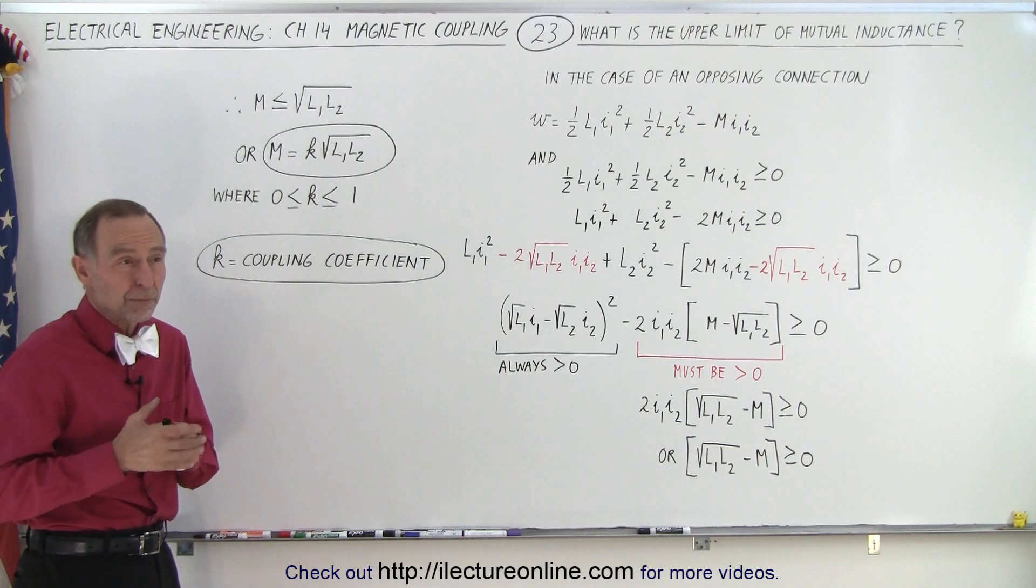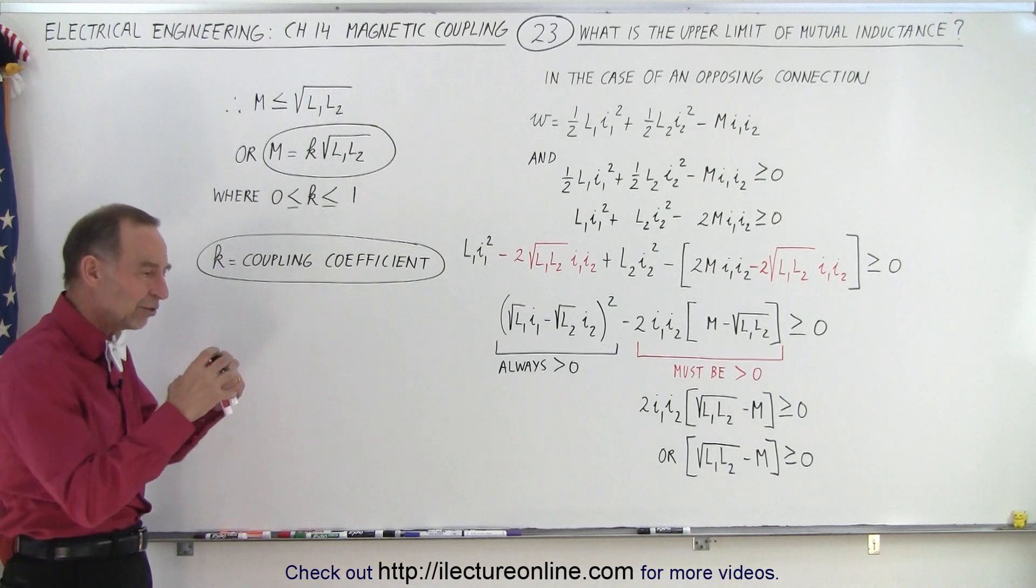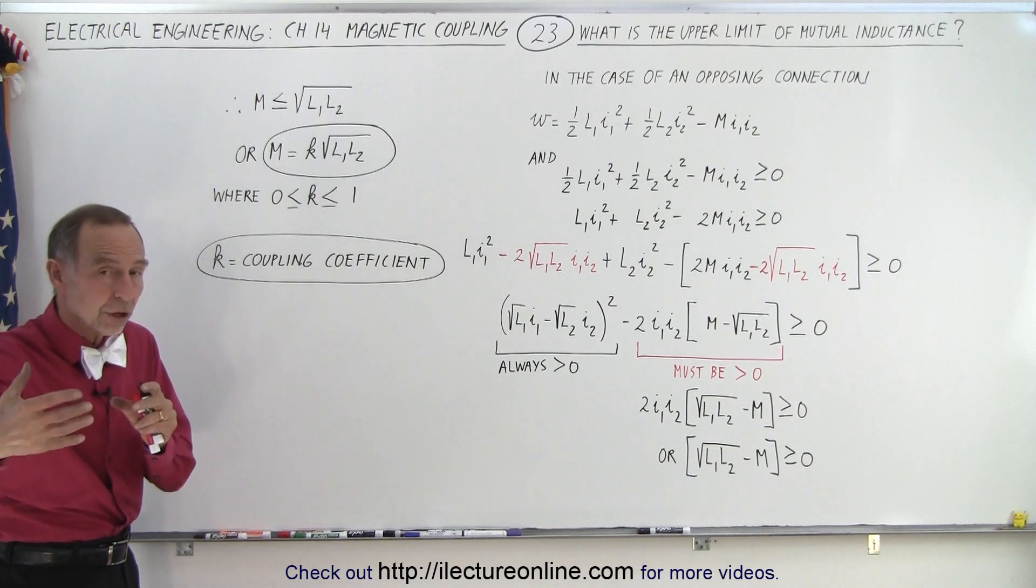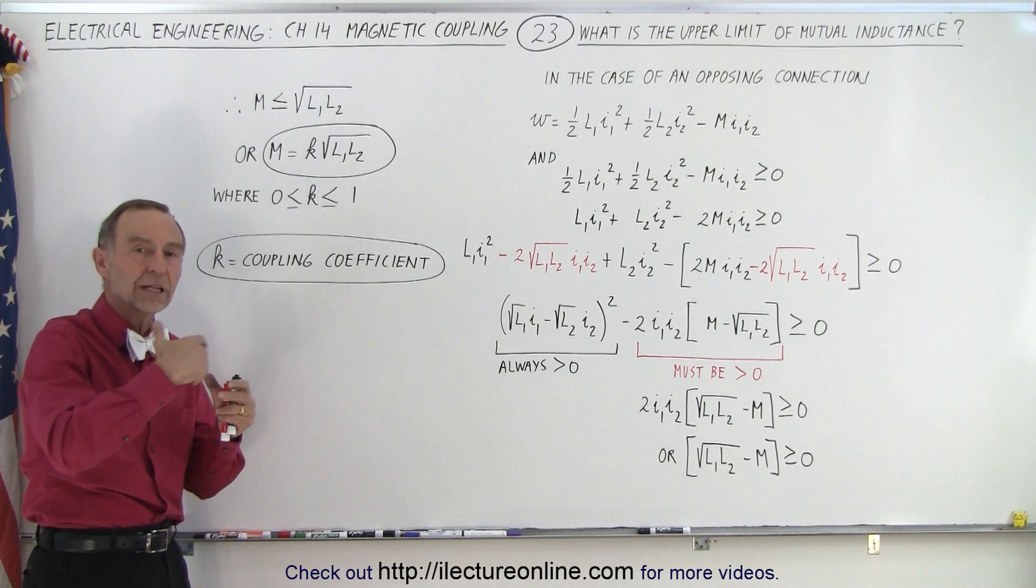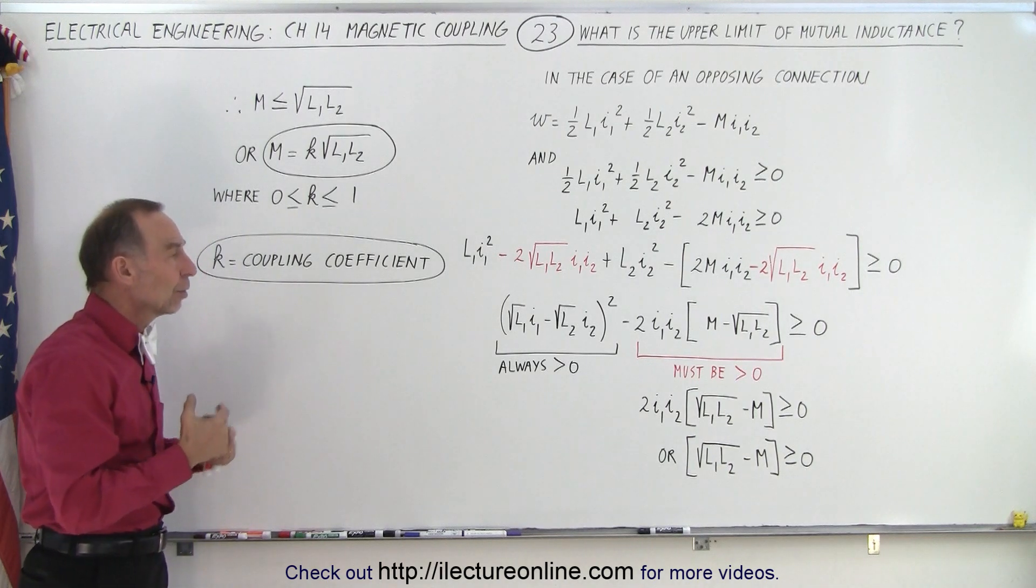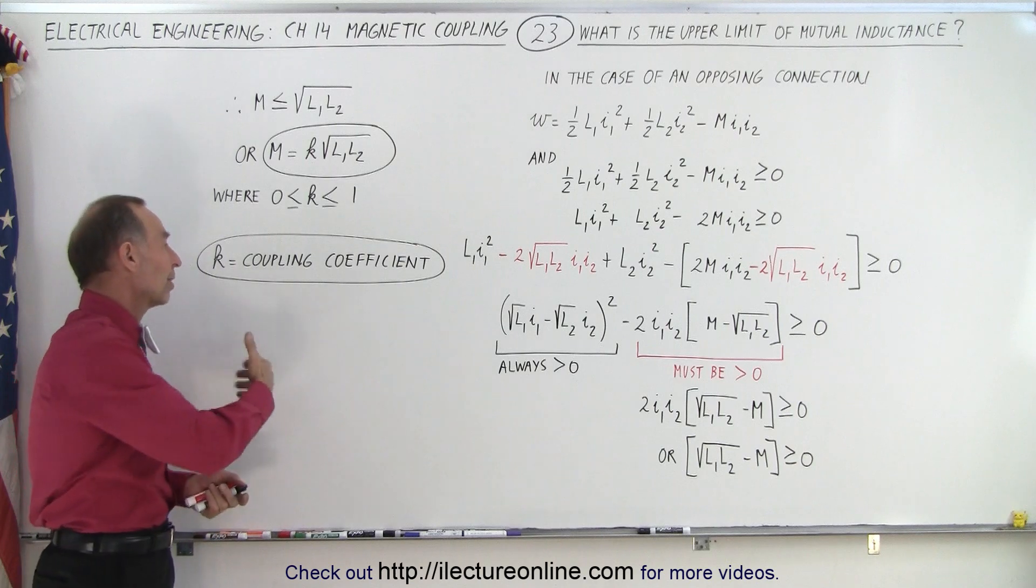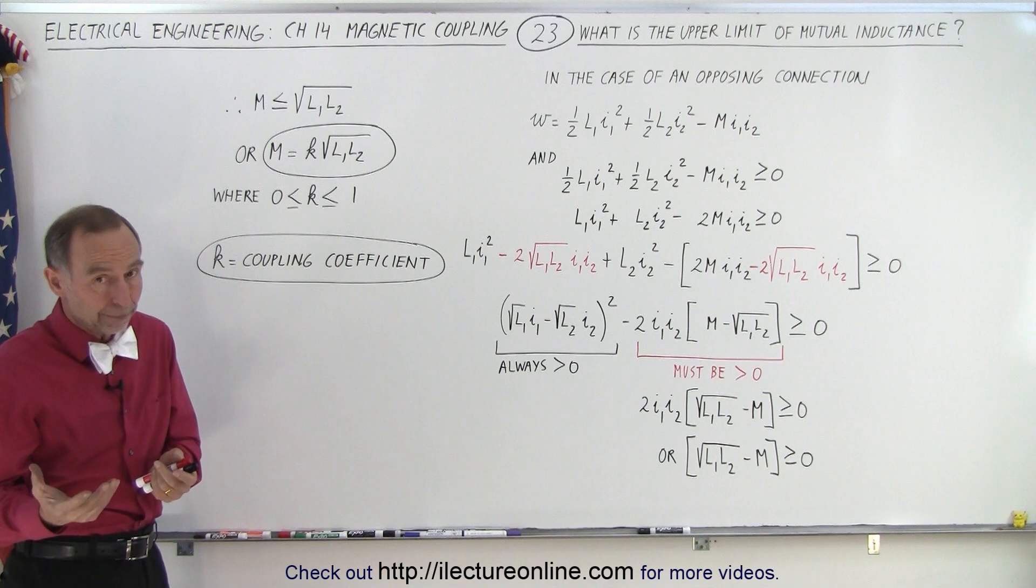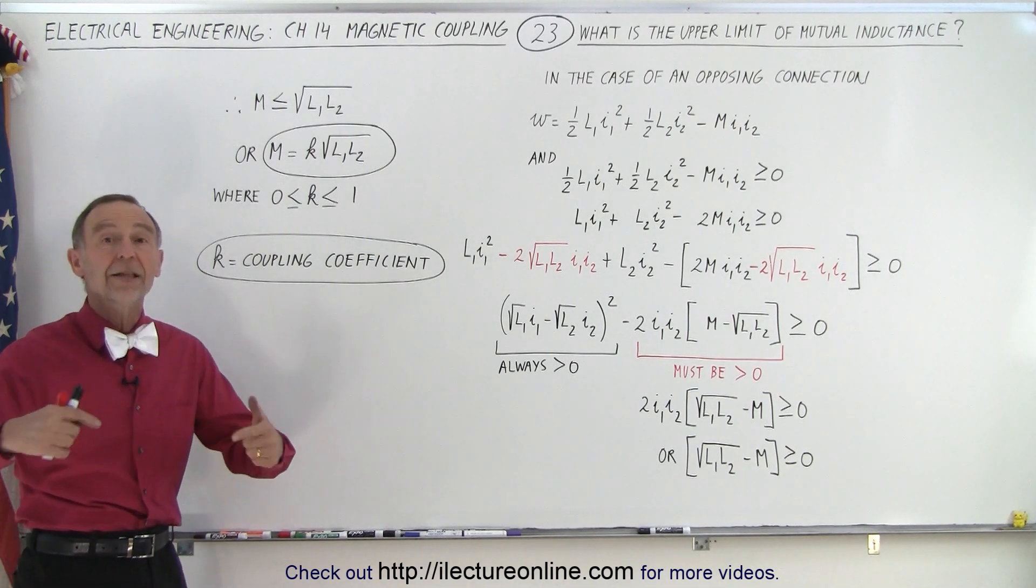So it has to do with how much of the magnetic field of the one inductor penetrates the coil of the other inductor. The more they penetrate one another, the more there's mutual coupling, the greater the value for k. But we know that k cannot be more than one. In other words, you cannot have greater mutual coupling than you have self-inductance.